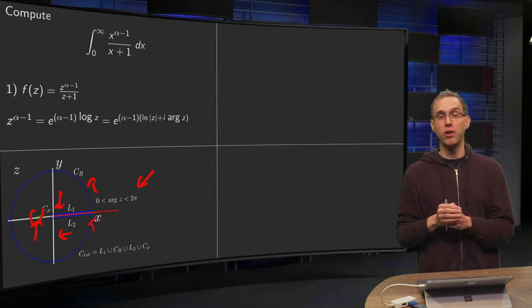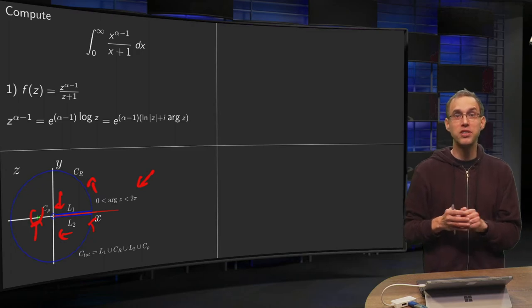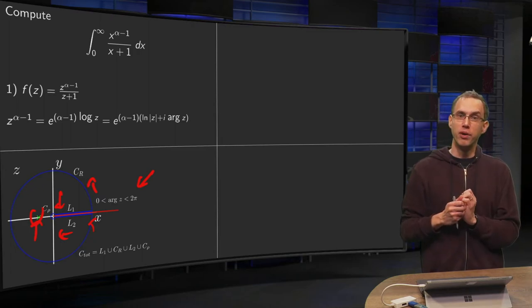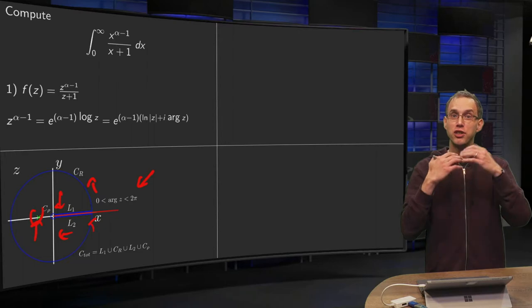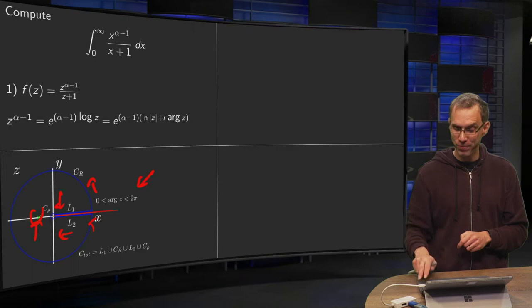So our total contour consists of positive x-axis L1, negative x-axis L2, big arc CR, small arc C_rho. And the idea is, of course, to get rid of the integrals along CR and C_rho using some estimates. L1 will give us the integral we want, and let's just hope that the integral along L2 doesn't complicate our problem.